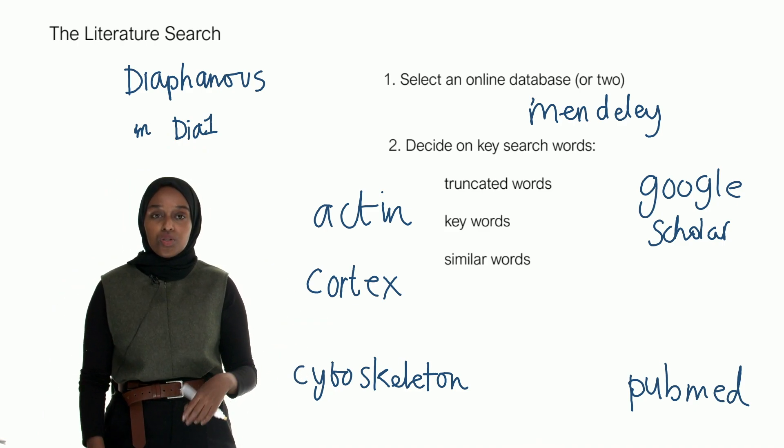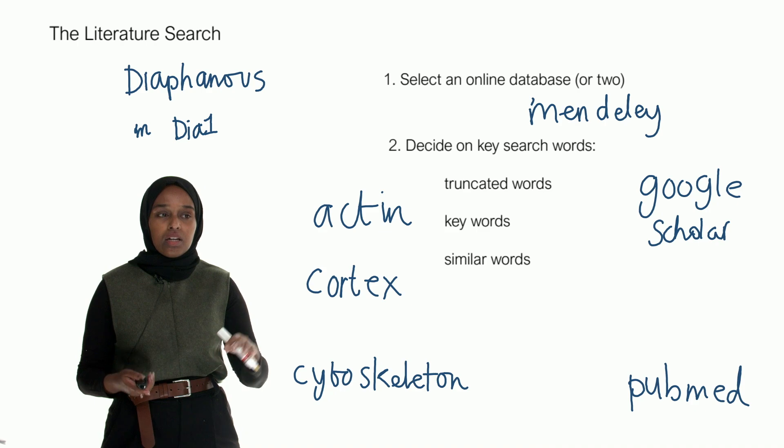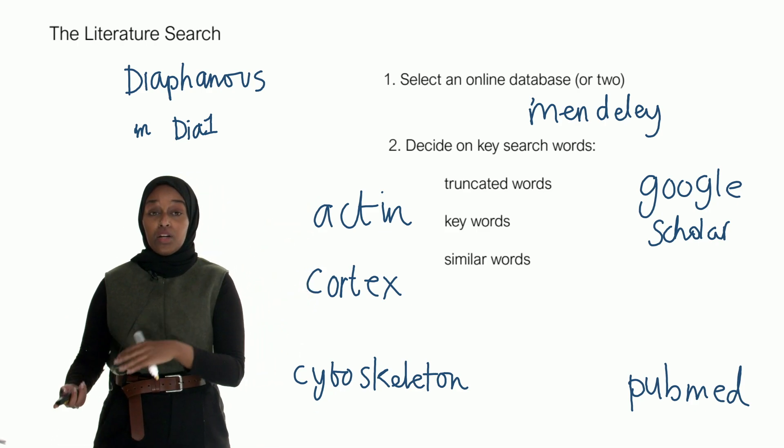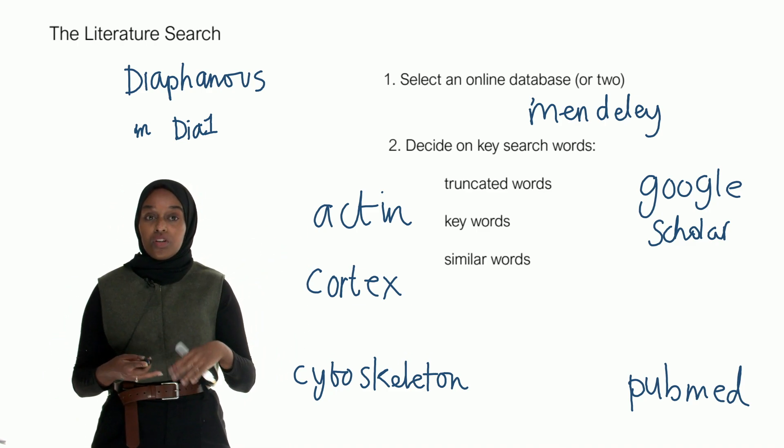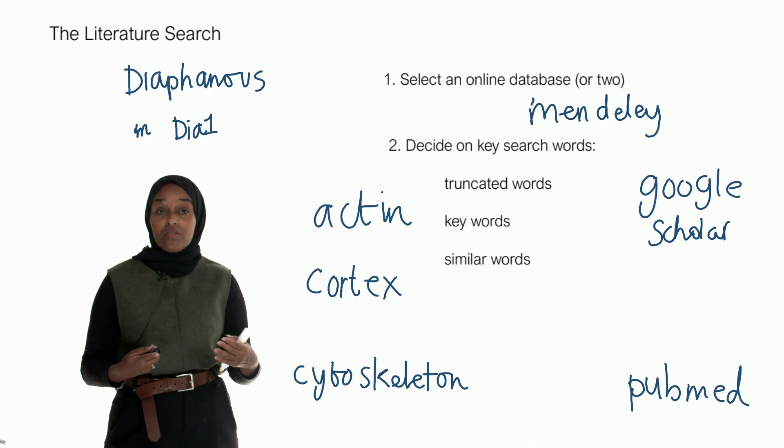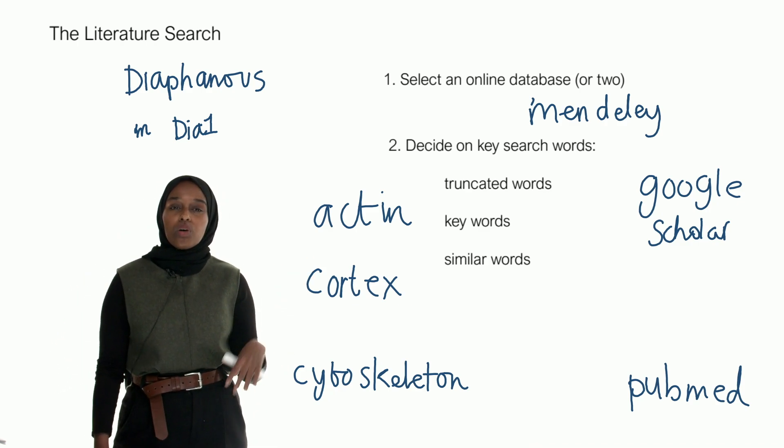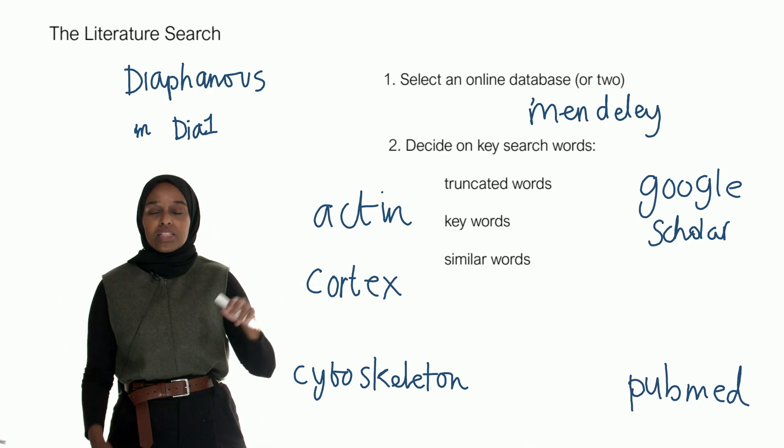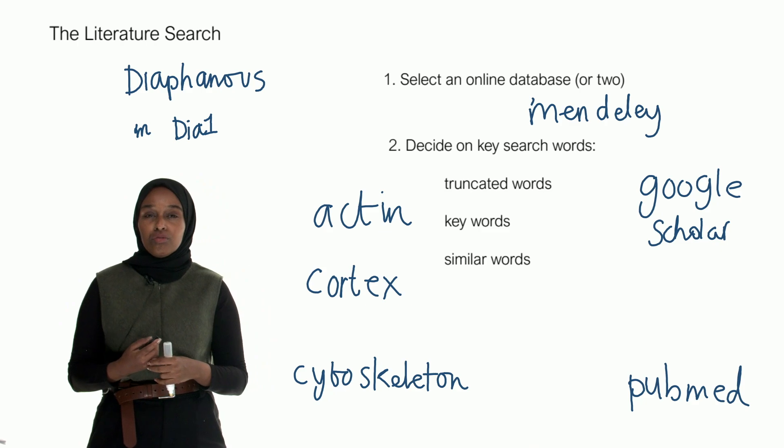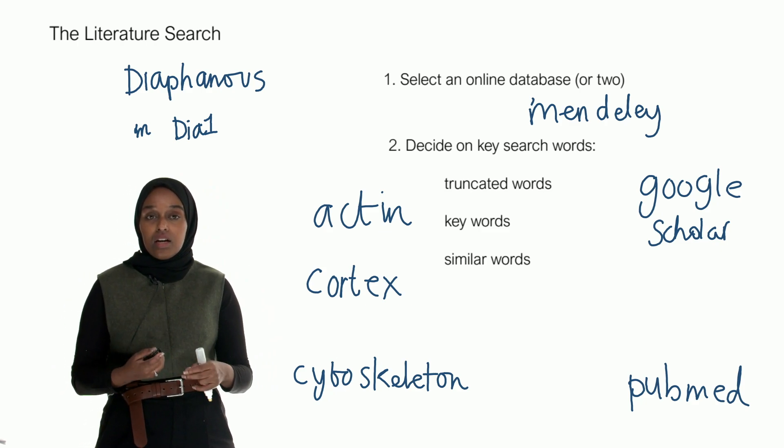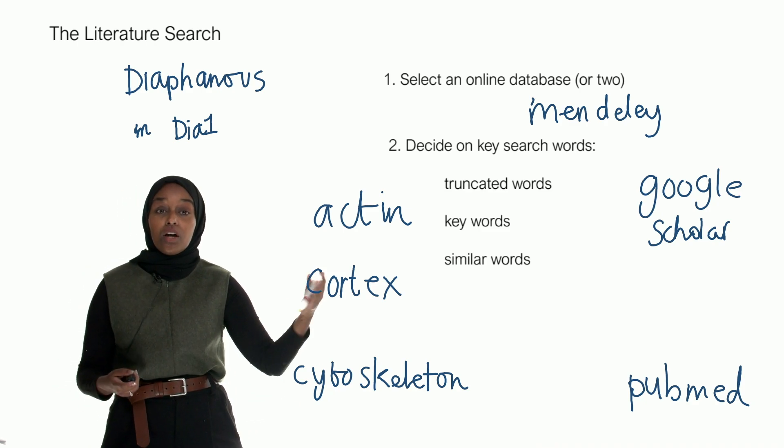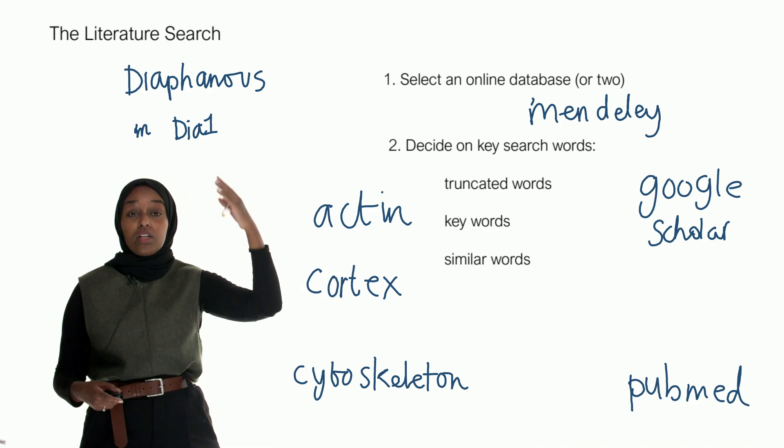And then similar words - words that might be slightly similar. So for example, looking at actin, sometimes looking for the protein myosin, which is generally associated with actin quite a lot. Sometimes if I search for myosin, I'll find papers that are actually quite relevant for actin as well. So what words could you use to really select as many papers as possible? You never know - you might find something that you wouldn't have found otherwise.